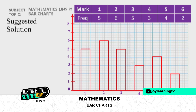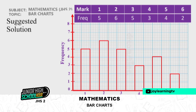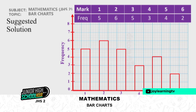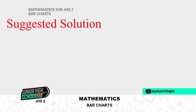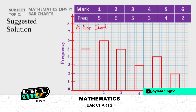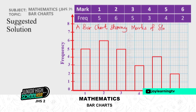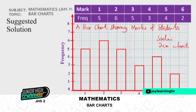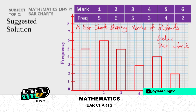Now I label my frequency axis and my marks axis clearly. Then I write the title: 'A bar chart showing marks of students.' The scale I used was two centimeters equals one unit, which I also indicate on the graph. Those are the remaining elements needed to make the bar chart a perfect, complete presentation.